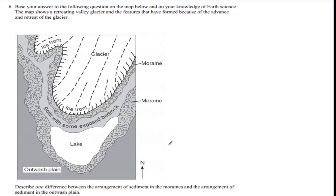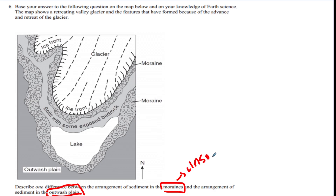Number six is a short answer question — pause and write your answer. Describe one difference between the arrangement of sediment in a moraine and the arrangement of sediments in an outwash plain. Moraine sediment is unsorted; outwash plain sediment is sorted. That's what 'arrangement' means here. You could also say it sorts from large to small — that's fine.